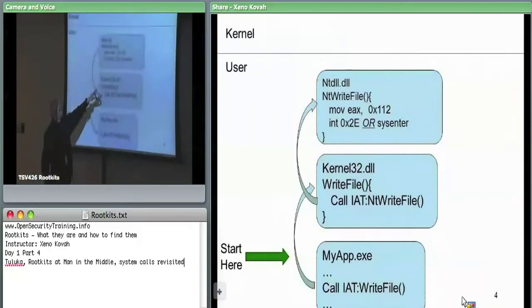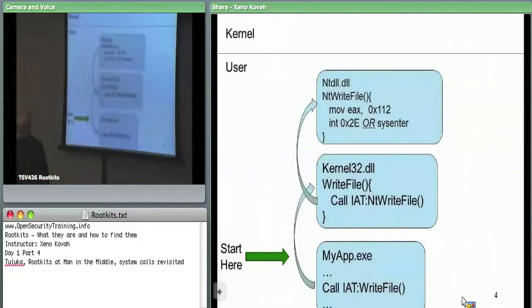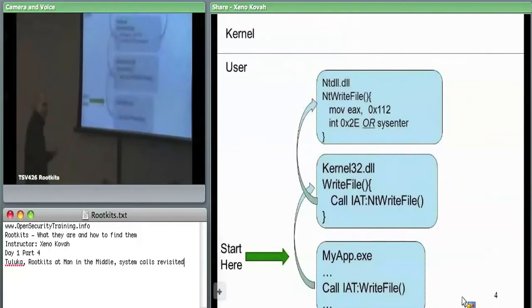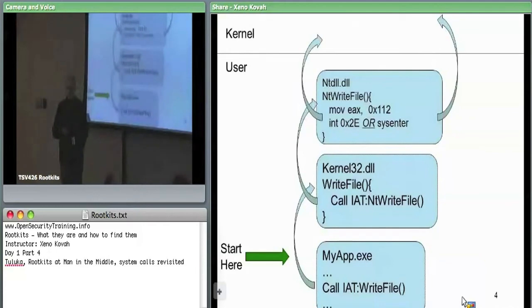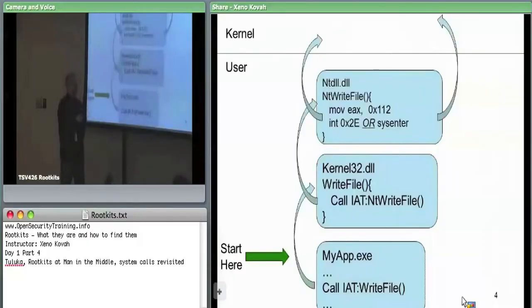The int 2E or sysenter instructions are what actually execute the transition into kernel space. Int 2E was the old way — Windows stopped using it as of Windows 2000. Now they use the specific sysenter instruction. So you call something like WriteFile, it gets you into kernel32, kernel32 gets you into ntdll, and ntdll provides the appropriate index so that when it transfers to kernel space, it gets the corresponding function.